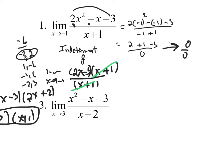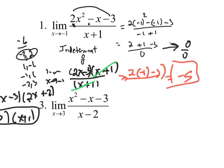Now using substitution again: 2 times negative 1 minus 3, all over 1. That's negative 2 minus 3, which is negative 5. So I just solved this problem without L'Hôpital's Rule — the old-fashioned way.